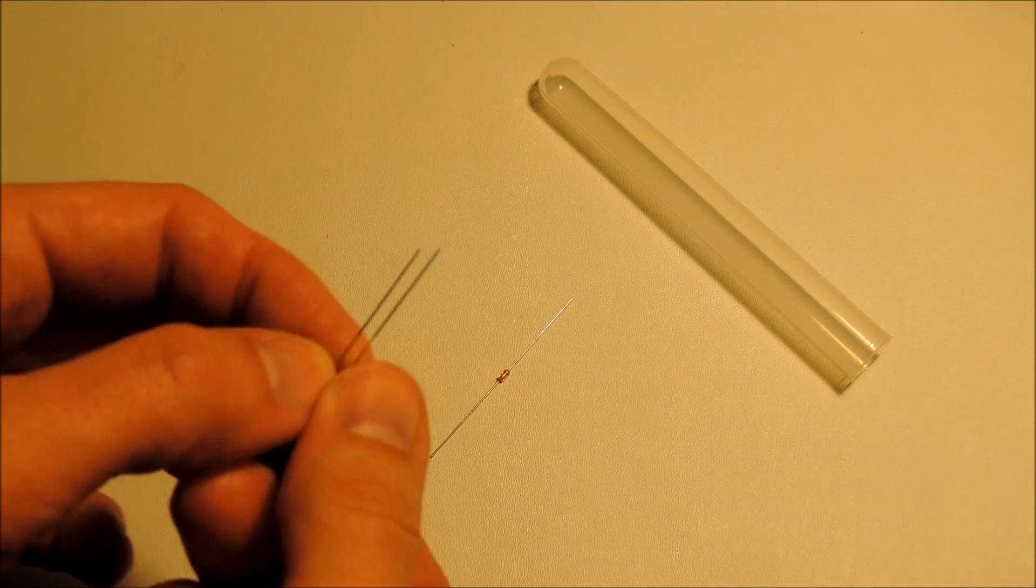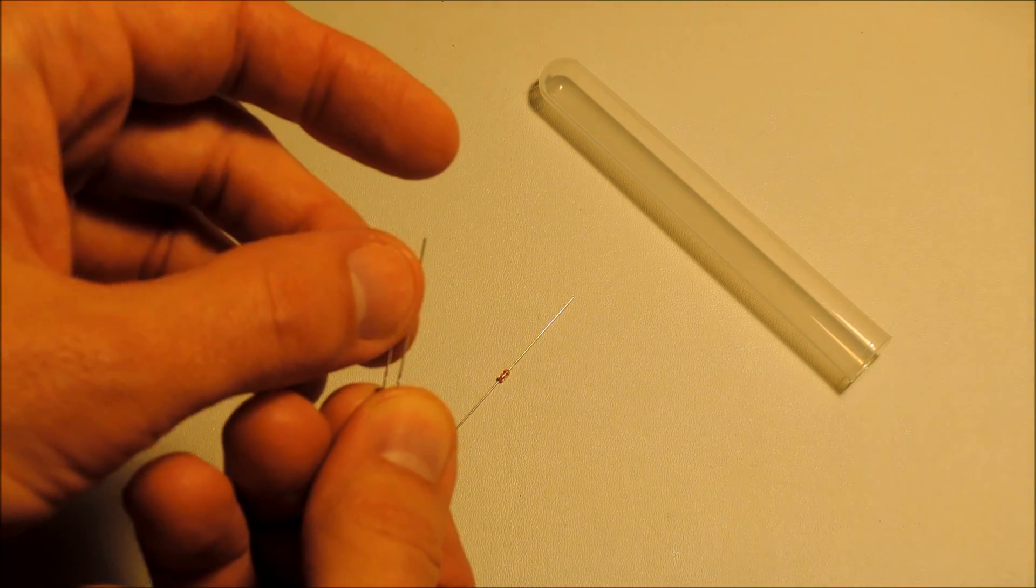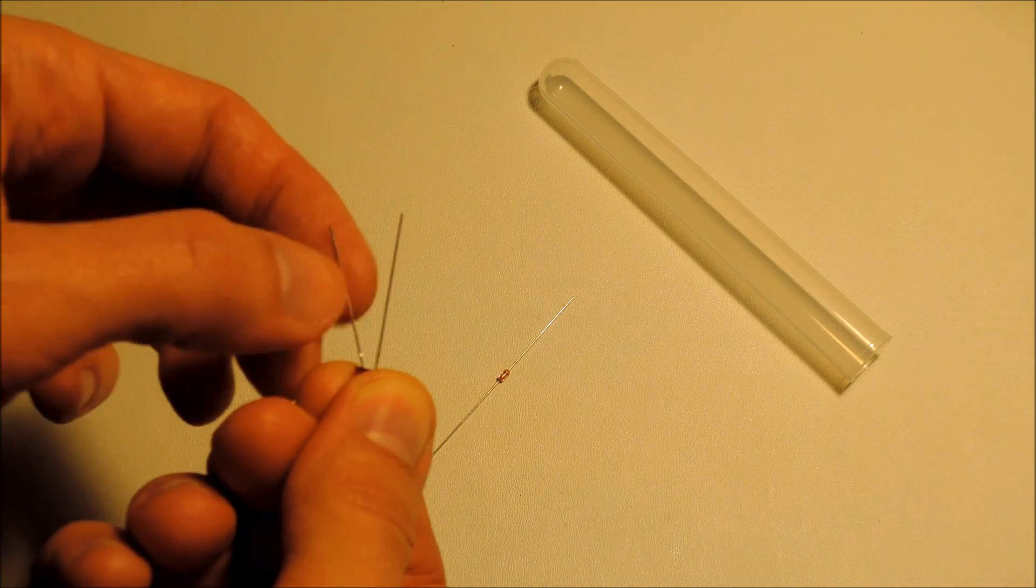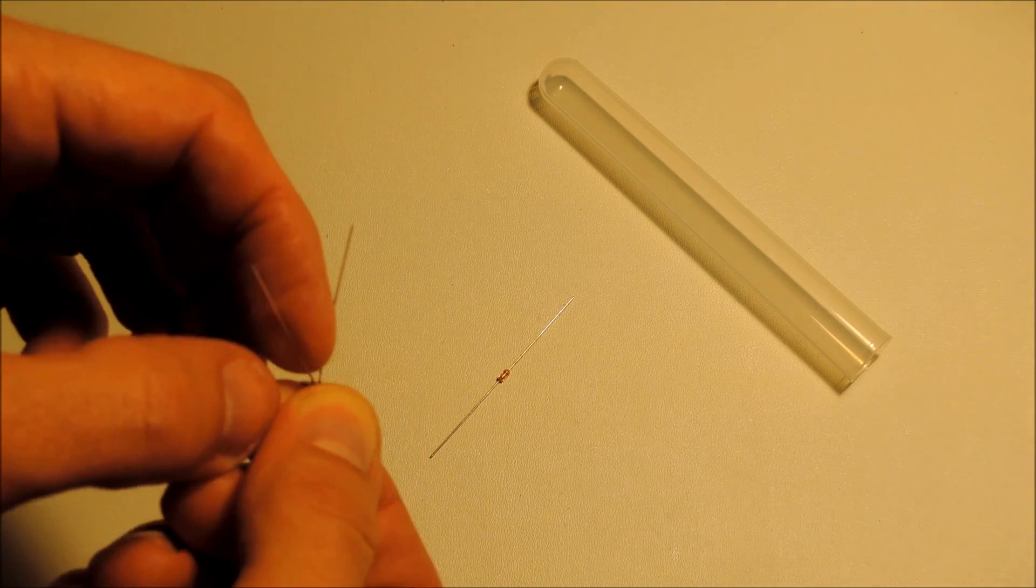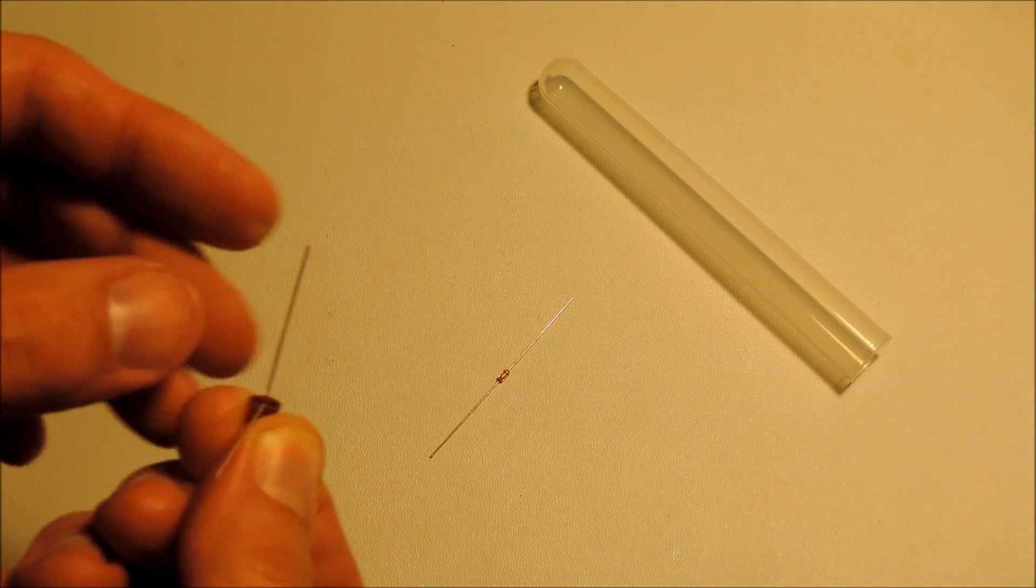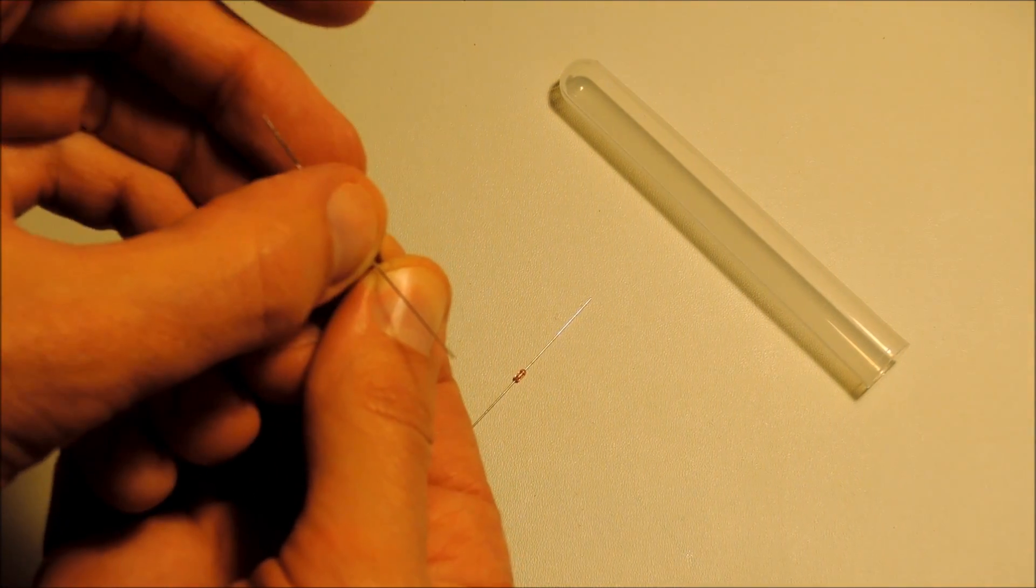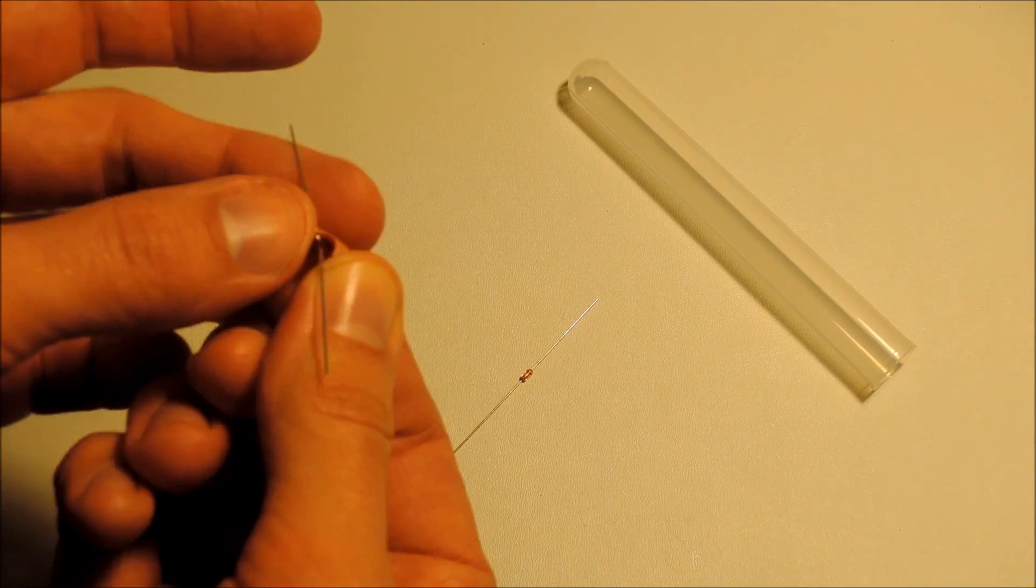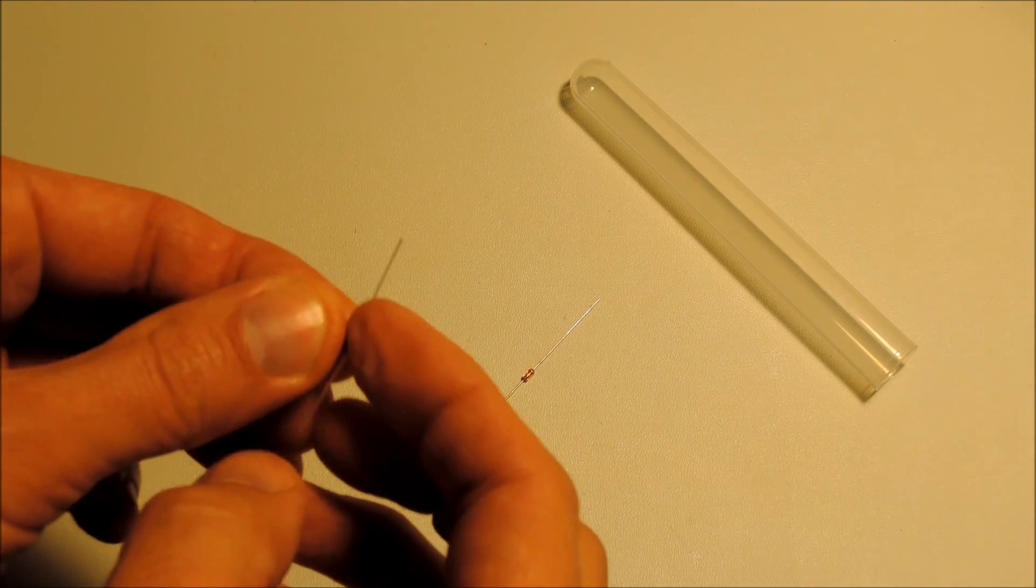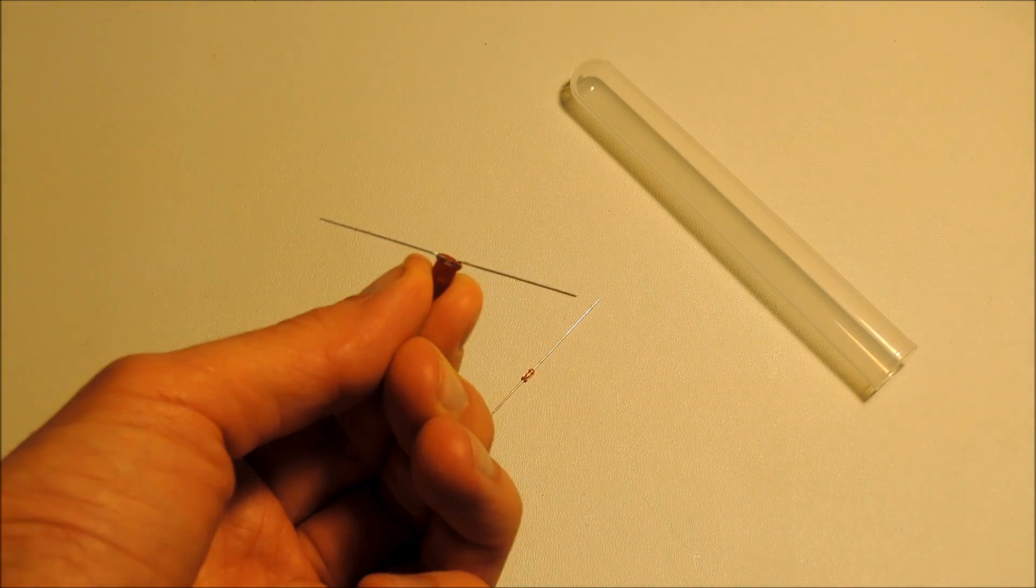This is just a low current LED. This one is the HLMP-D150 from Avago, you can get it from Digikey or a variety of places. Just take the leads and gently bend them out so that they kind of point straight out away from the package like that.